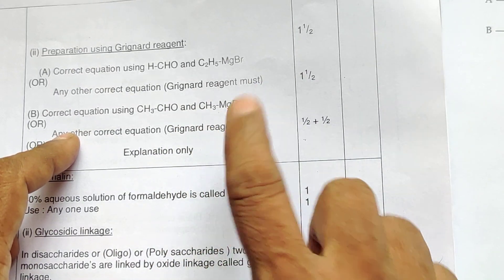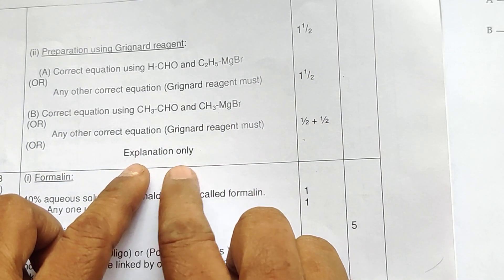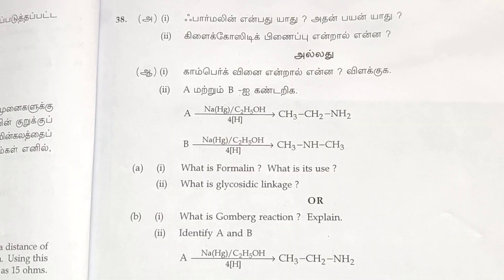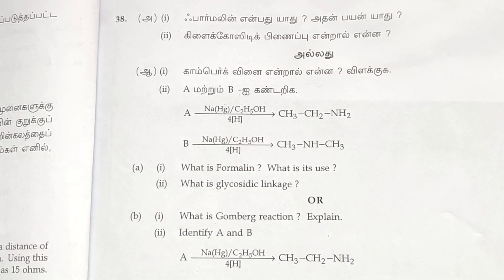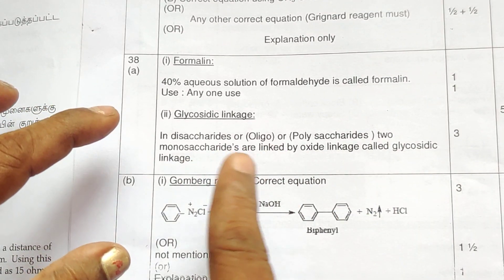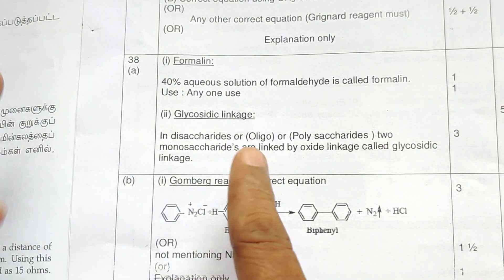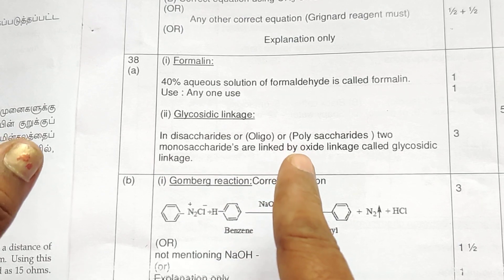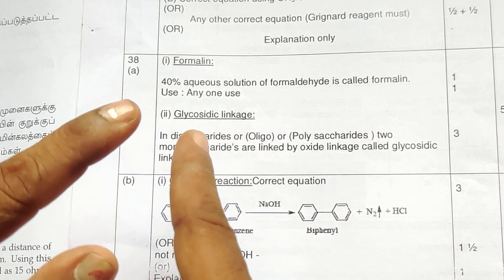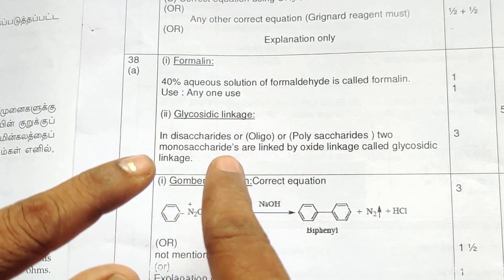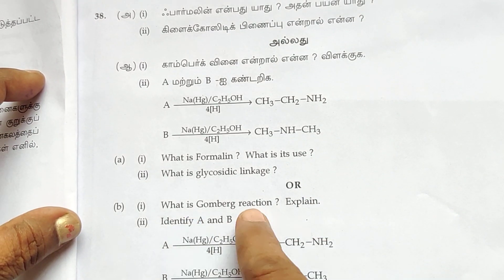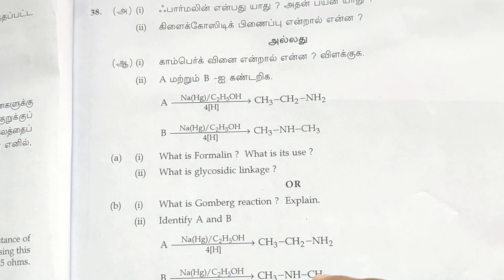Grignard reagent: you must include the explanation — half mark plus half mark — giving one and a half marks. For glycosidic linkage: what are disaccharides, oligosaccharides, or polysaccharides? Two monosaccharides are linked by an oxide linkage — that is glycosidic linkage. R is linked by oxide linkage — three marks will be given.